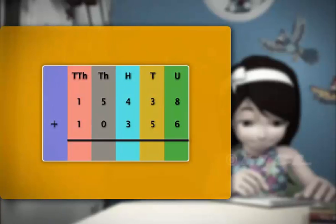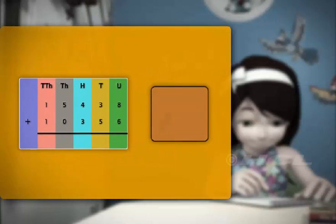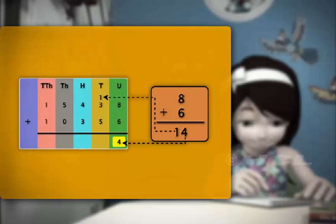So, let's write the two numbers in a table as shown. We always begin by adding the digits in the units column. We add 8 and 6 to get 14. We place the 4 of 14 in the units place of the answer and then carry over the 1 to the tens column.